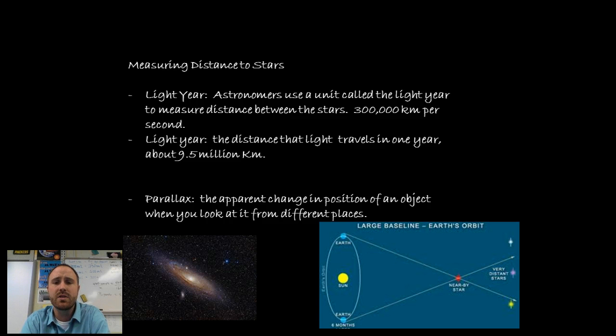So scientists use different points of where Earth is located to look at the different stars and to determine how far away it is. This gives us that apparent change of position and we're able to determine the distance of a star.